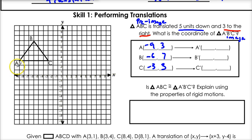Now let's do our translation. We'll do A first. A goes five units down and then three to the right. So if I go five down and three to the right, my new point for A prime is negative 6, negative 2.